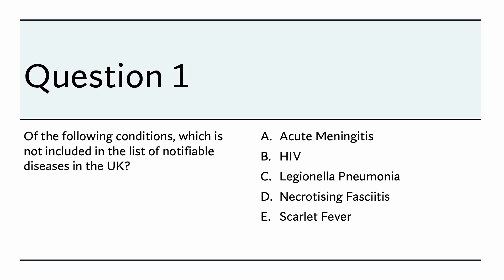Of the following conditions, which is NOT included in the list of notifiable diseases in the UK? Is it scarlet fever, necrotizing fasciitis, legionella pneumonia, HIV, or acute meningitis? Let's take a five-second pause and make our choice. The right answer is HIV.